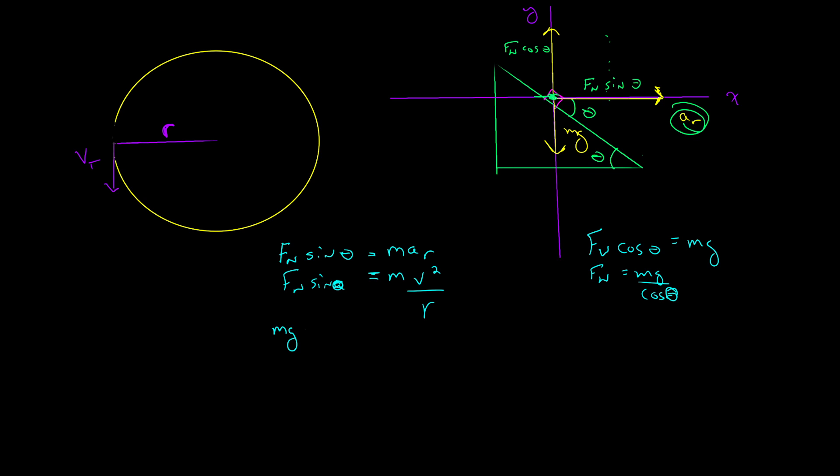So I get mg sine theta over cosine theta equals mv squared over r. The m's go away. And I get g tangent theta equals v squared over r, or the tangent of theta equals v squared over rg.